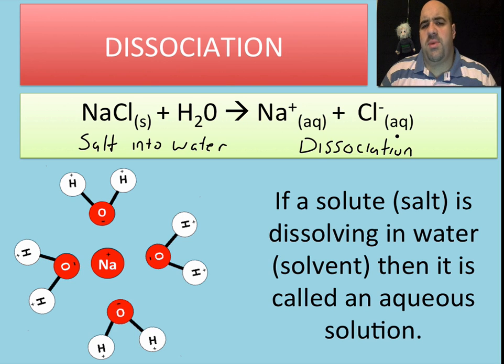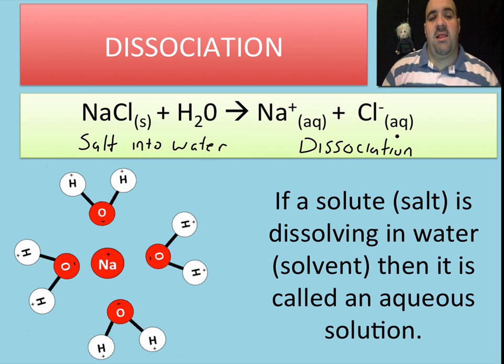So that's what happens when we put a polar solution or a polar substance in water. It's going to usually dissociate. There are some solubility rules. Certain things may or may not form precipitates in water, but we'll talk about them at a later date.